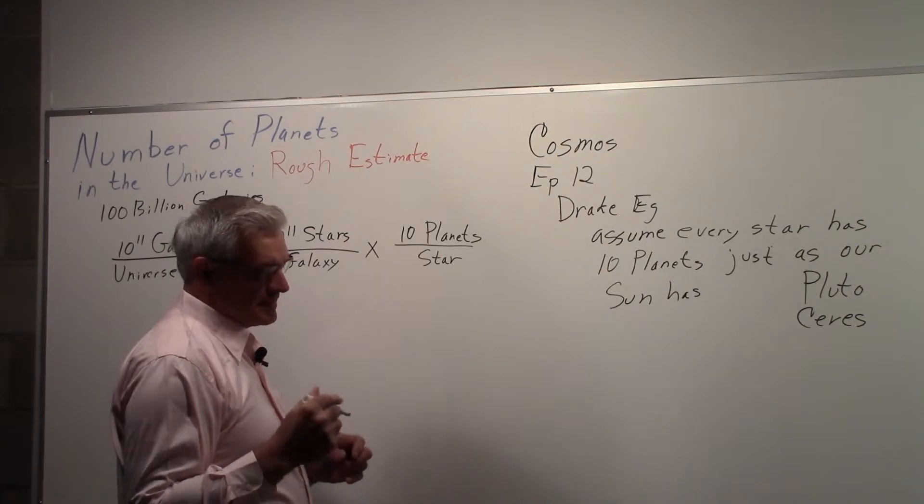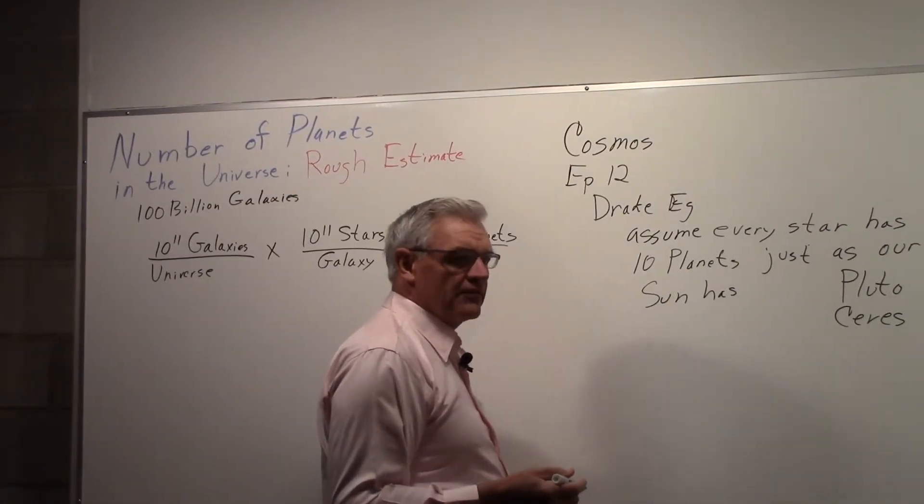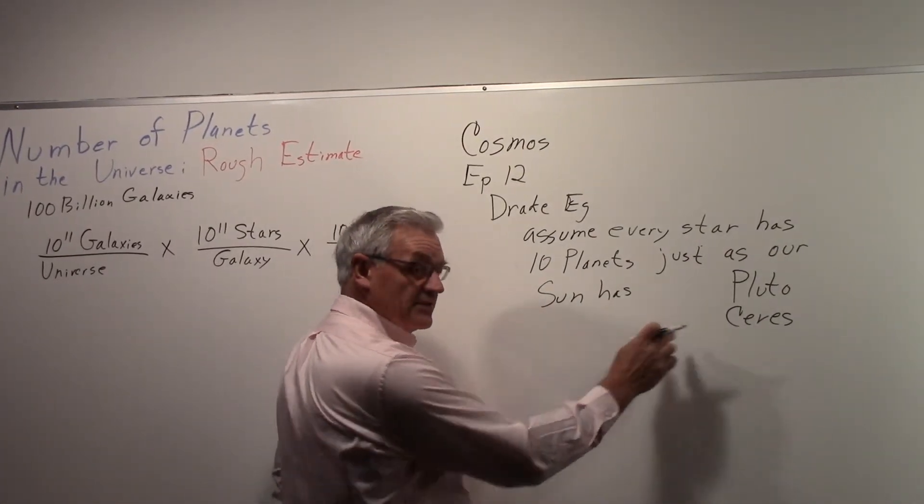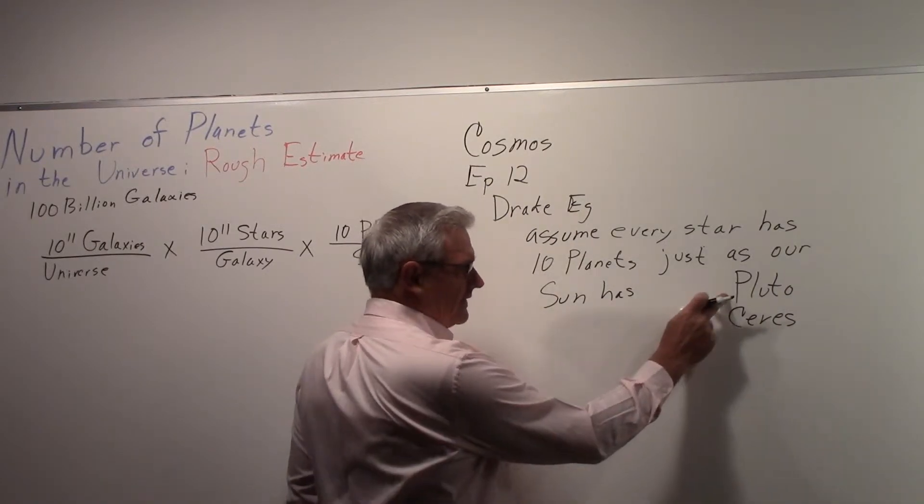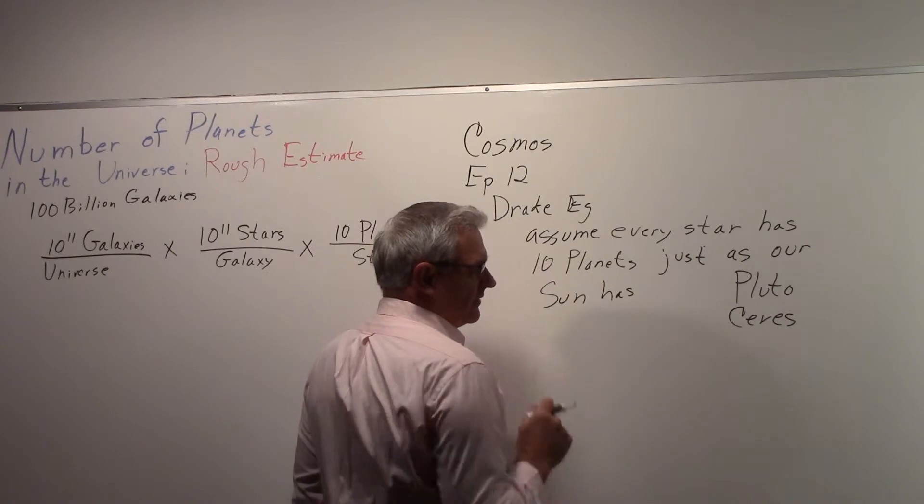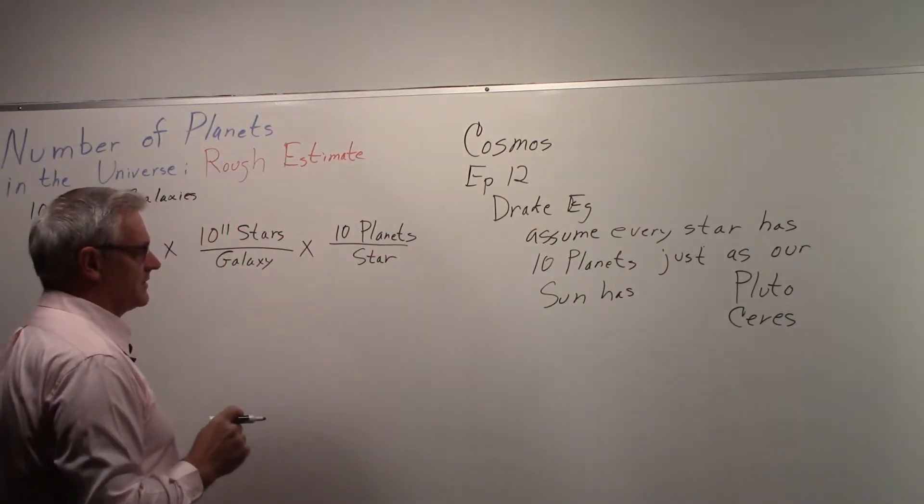It's interesting, this is now May 27th, 2015. The Dawn spacecraft has just arrived at Ceres, and this summer in July of 2015, the New Horizons spacecraft will be at Pluto. Just a side note.